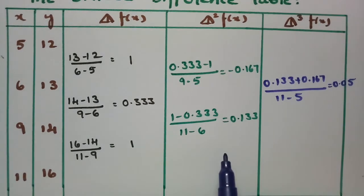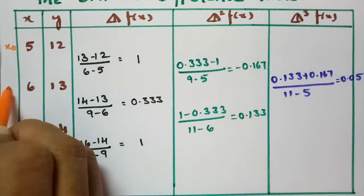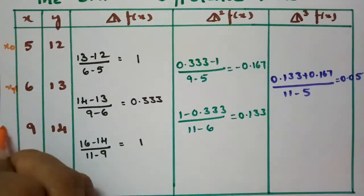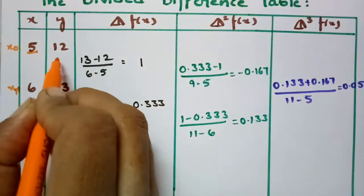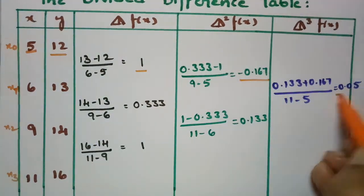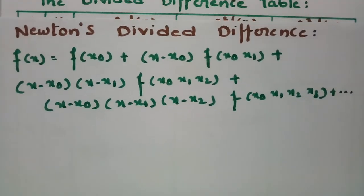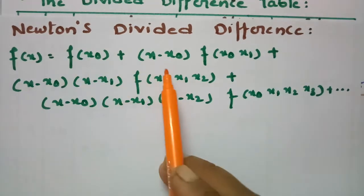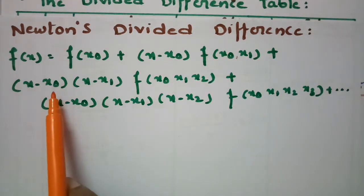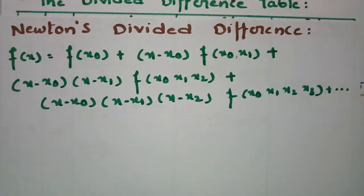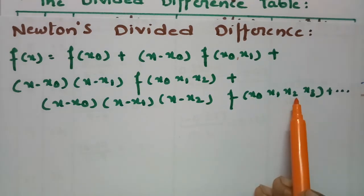This is the first, second, and third divided difference. The values are labeled x0=5, x1=6, x2=9, x3=11, with y0=12. According to Newton divided difference, the formula is: f(x) = f(x0) + (x−x0)·f[x0,x1] + (x−x0)(x−x1)·f[x0,x1,x2] + (x−x0)(x−x1)(x−x2)·f[x0,x1,x2,x3] + ...